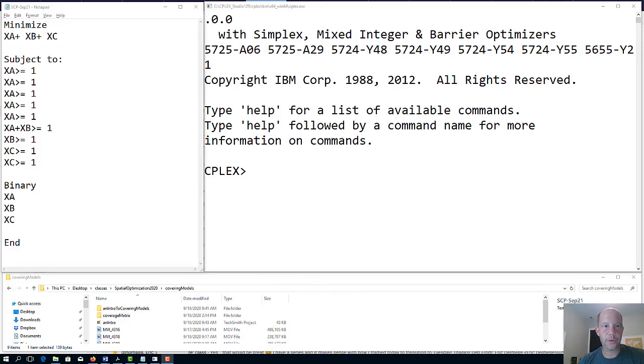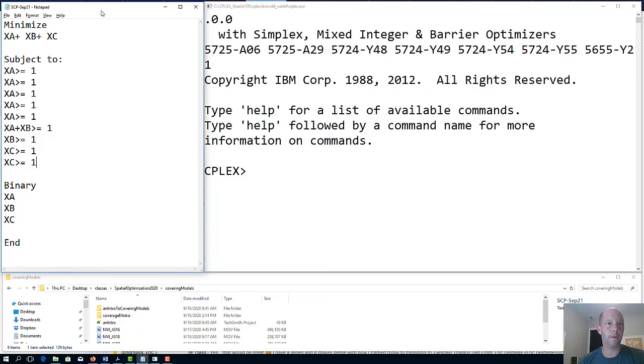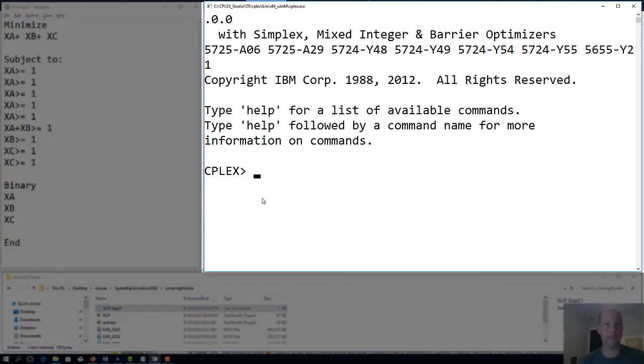I will briefly show what happens when you solve this problem within CPLEX. I've written the problem here to your left of the screen. It's a minimization problem. We have three facilities to locate subject to the constraints—the same ones I wrote on the blackboard before. Then I make x_A, x_B, and x_C binaries. I save this as SCP September 21st.